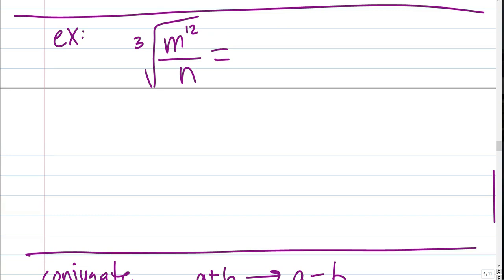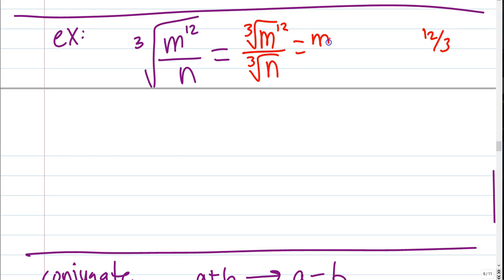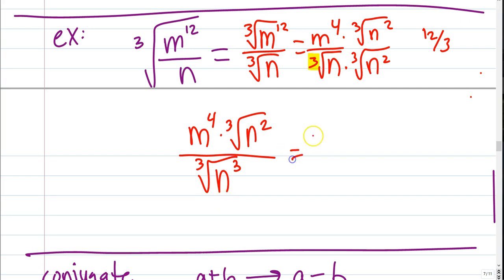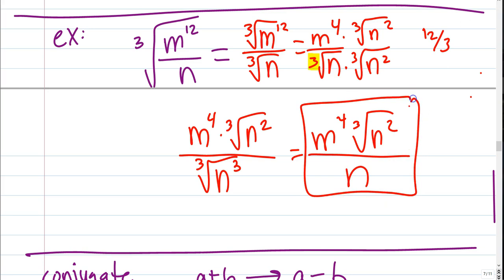Next: 3rd root of m to the 12th over 3rd root of n. Well, 3rd root of m to the 12th — 12 over 3 — is just m to the 4th. The denominator has 3rd root of n, which is not okay — we need to rationalize it. It needs 3 of something and currently has 1, so we give it 2 more n's. That gives us m to the 4th times 3rd root of n squared all over 3rd root of n to the 3rd, which simplifies to just n. So the answer is m to the 4th times 3rd root of n squared all over n. We made the numerator a mess, but we rationalized the denominator.